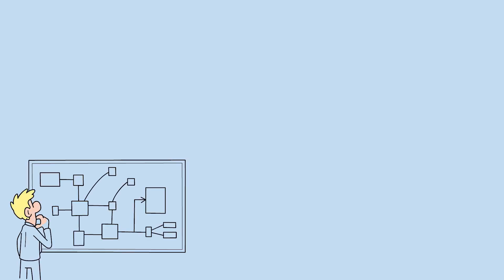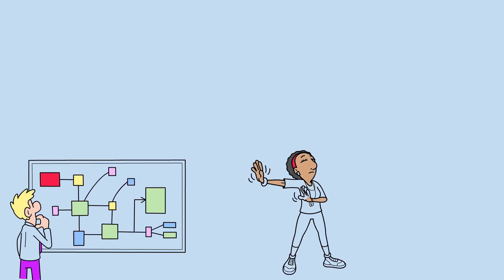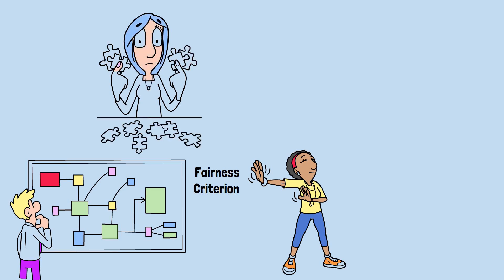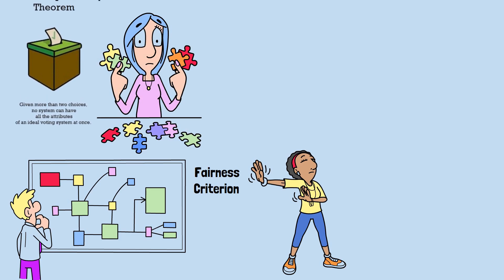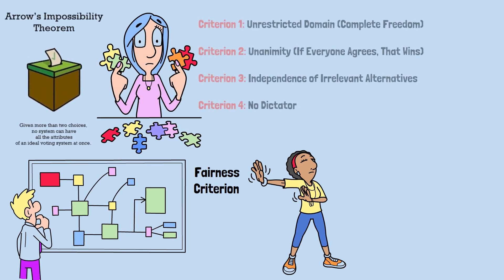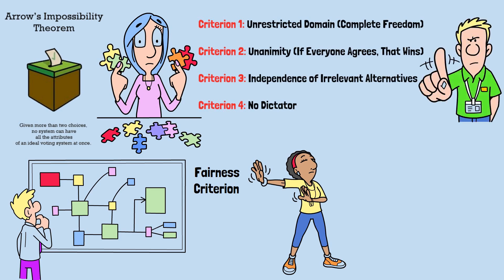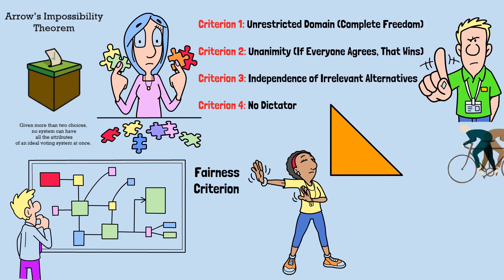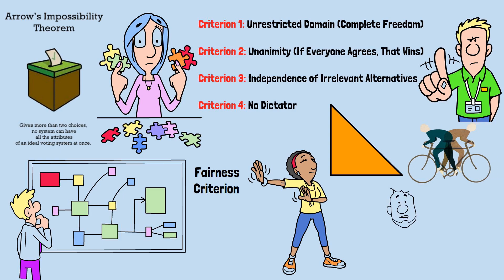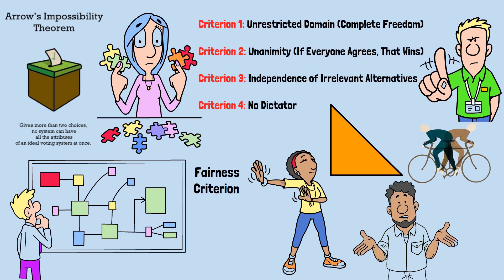See the pattern? Every system breaks. Every system violates at least one fairness criterion that seems obviously necessary. This isn't because voting system designers are stupid — it's because Arrow proved it's mathematically impossible to satisfy all the criteria. You can choose which criterion you're willing to violate, but you can't avoid violating at least one. This is like asking for a four-sided triangle. The concept itself is contradictory. Fair voting with more than two candidates is mathematically incoherent.